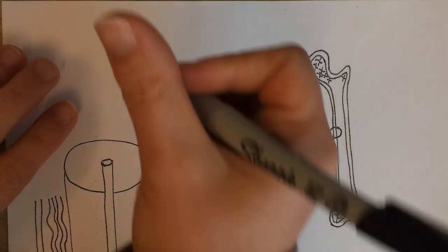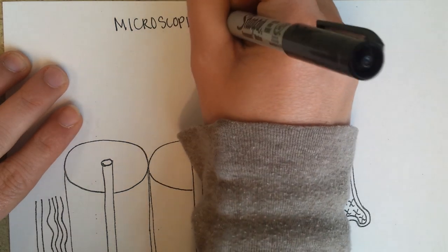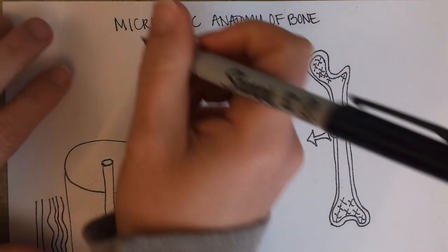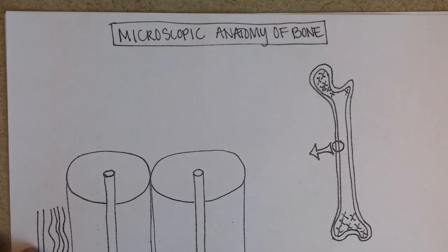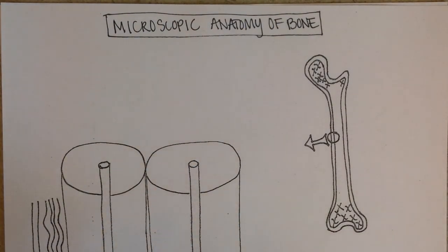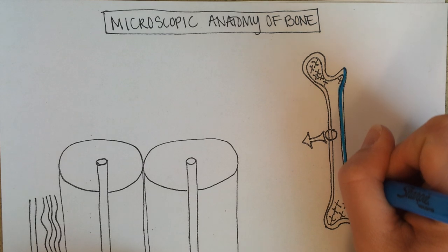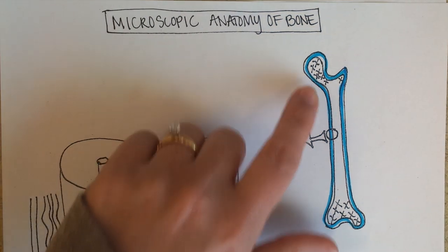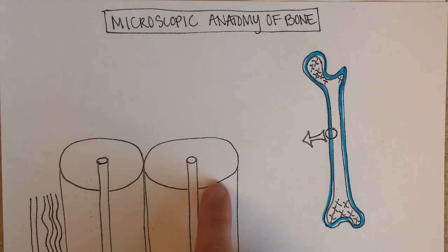Microscopic Anatomy of Bone. All right, so over here you've got a long bone and we just went over the components of a long bone. We talked about the compact bone as this outer layer, and then we talked about the spongy bone at either end of the bone. And what we're gonna look at right now is a close-up of a little bit of that compact bone.